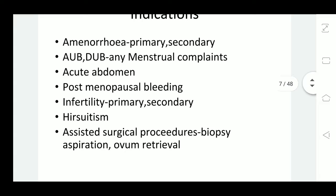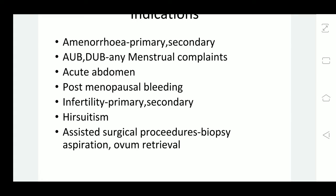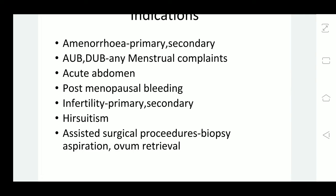Another very common complaint is menstrual complaints. The cyclicity of menstruation may vary — it may be polymenorrhea, oligomenorrhea, severe dysmenorrhea which is quite common in adenomyosis, or heavy flow, menorrhagia. In these complaints, we would like to do ultrasound to find out if there is any obvious cause. Abnormal uterine bleeding or dysfunctional uterine bleeding may have a hormonal cause, or there may be polycystic ovary, endometrial cancer, or cervical cancer. Ultrasound will help us find out if there is any such pathology.